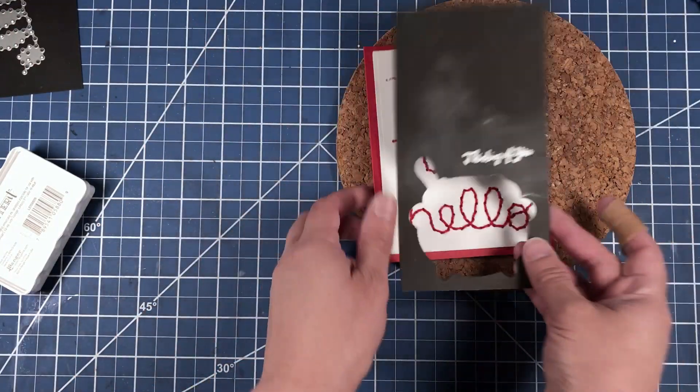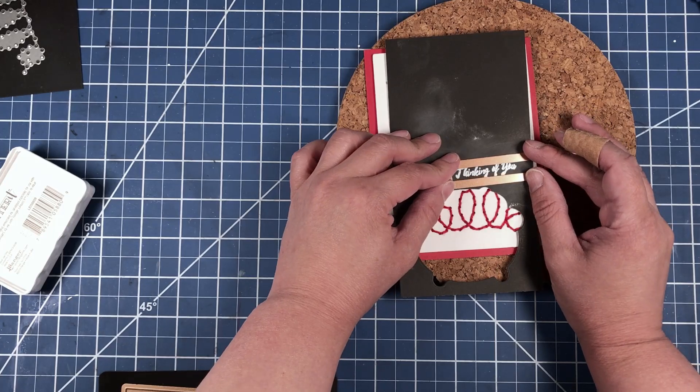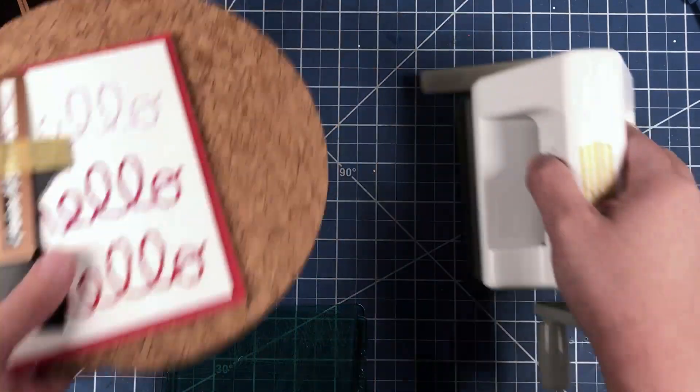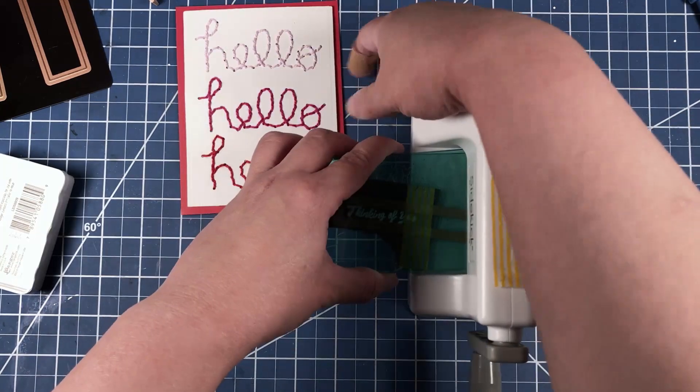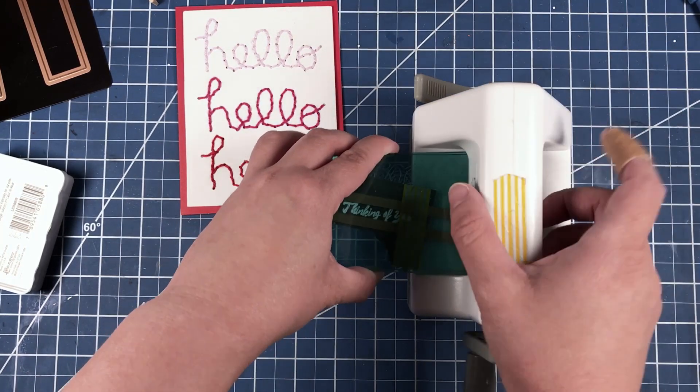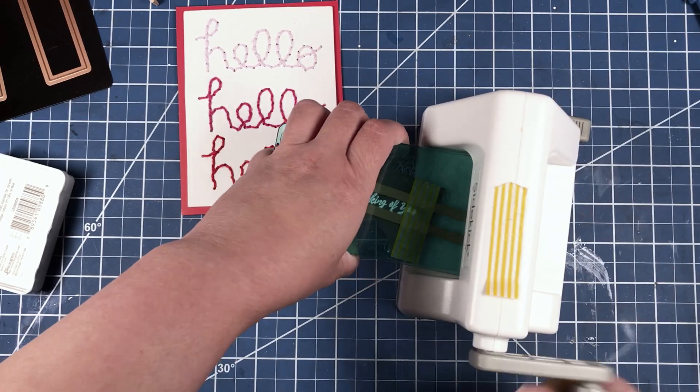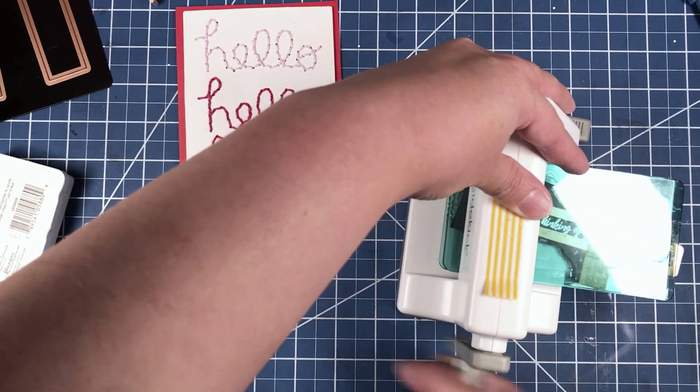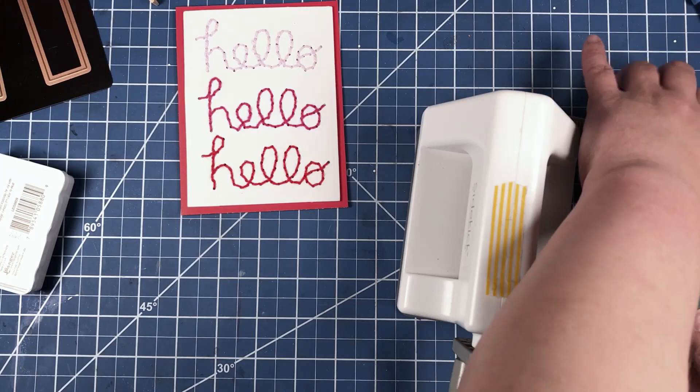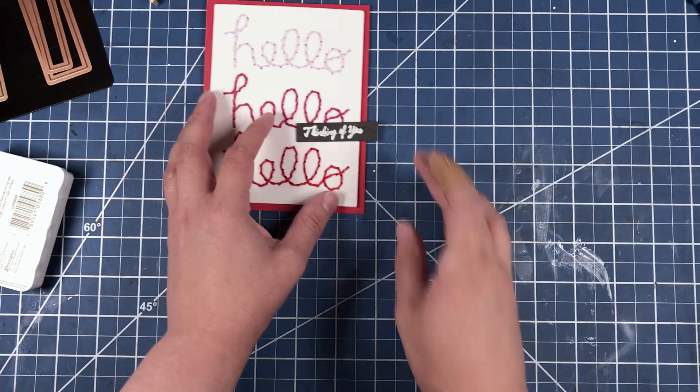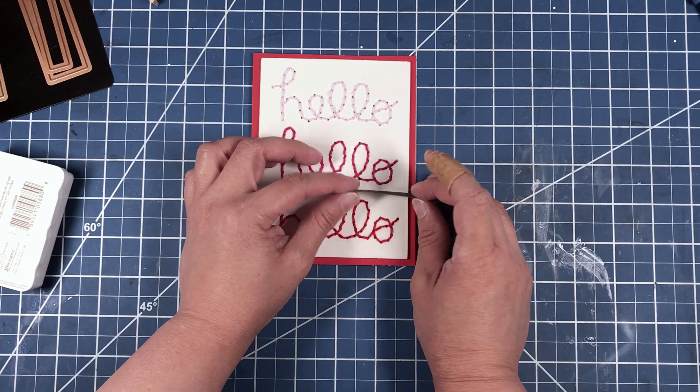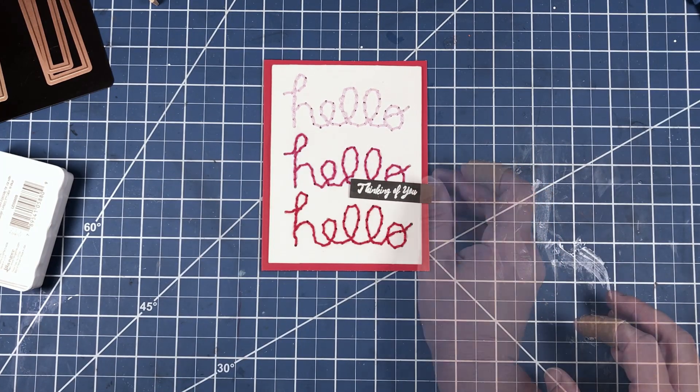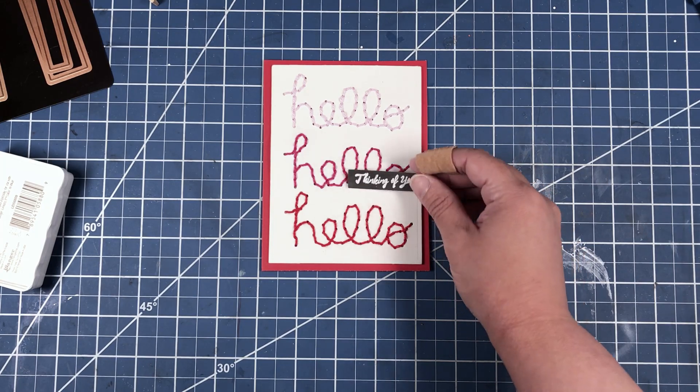I think that looks really cute. Now we just have to trim it up and stick it on our card, and then we will be done. That may not look so bad actually. So we'll just place that there. So now we're just going to bring in our small die cutting machine.